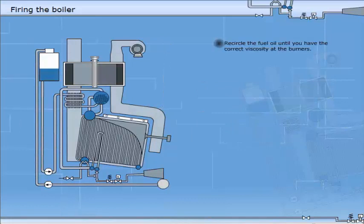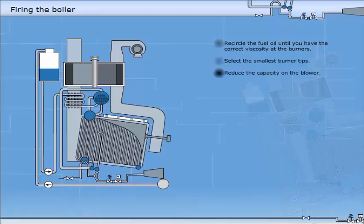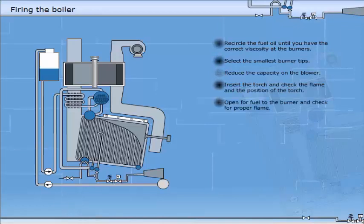Re-circulate the fuel oil until you have the correct viscosity for the burners. Select the smallest burner tips. Reduce the capacity on the blower. Insert the torch and check the flame and the position of the torch. Open for fuel to the burner and check for proper flame. If okay, remove the torch and check the flame again.